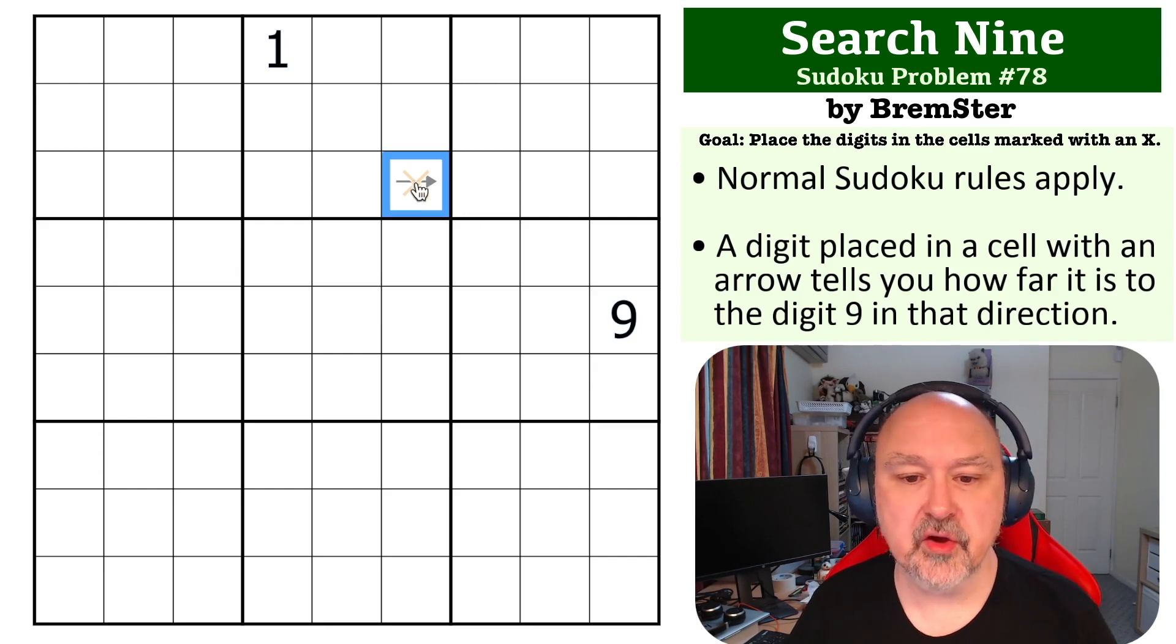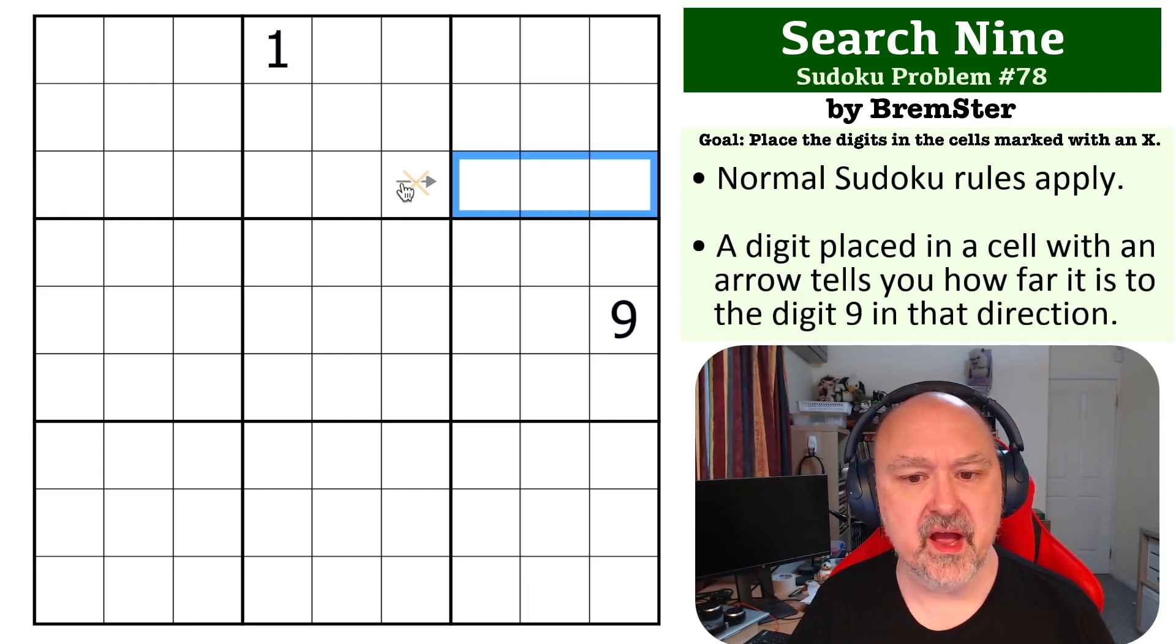Okay, so we've only got the one arrow in this because we're only trying to figure out this one cell, and this is pointing to where a 9 is going to be in this row because it'll point to where the 9 is in this direction.